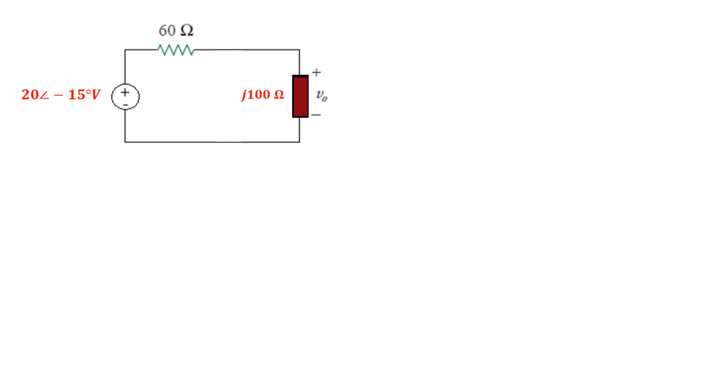So this kind of looks like two impedances are in series and the voltages are going to divide. So the total 20 minus 15 degrees volt is going to divide between these two impedances. So the voltage across the j100 ohm impedance that we just calculated in our last step is given by a voltage divider.